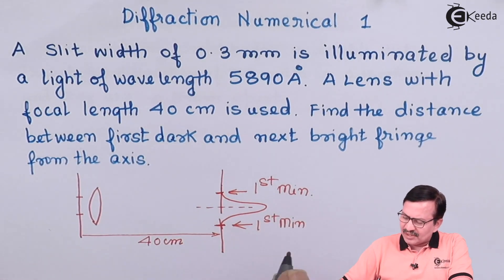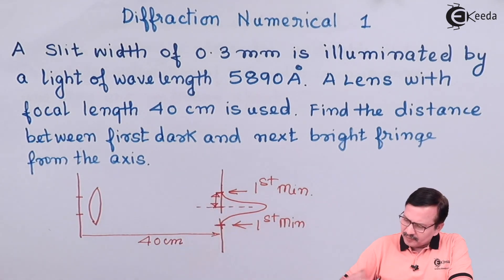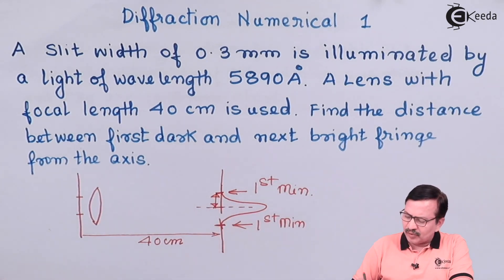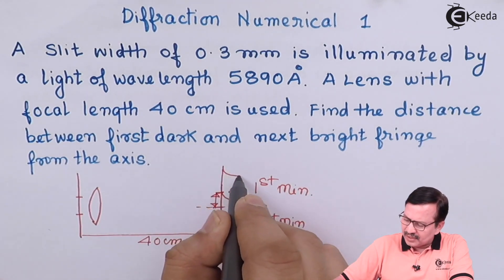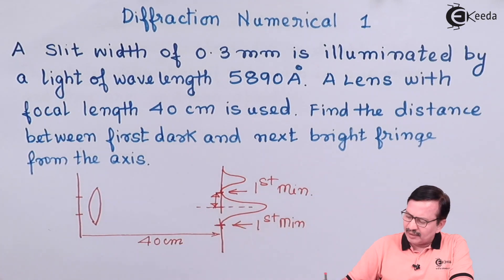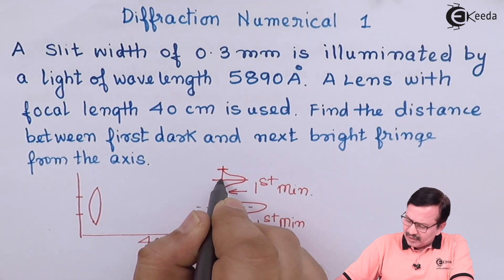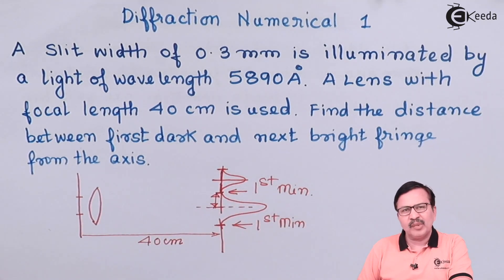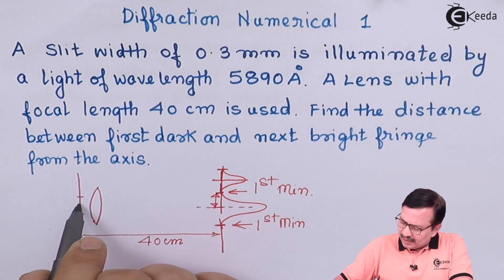And this is going to be the first minima on the other side of the central maxima. So what has been asked is for this distance. When you are asked for such a distance, remember this distance is going to remain constant. This is the center.